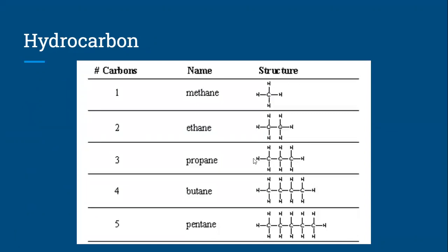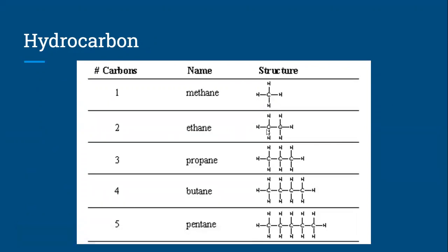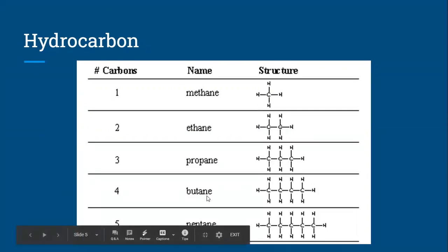Here's a look at what the carbon chain looks like. Methane has just one carbon, ethane has two carbons connected, propane has three carbons connected, butane has four, and pentane has five. If you notice, they look like they form a chain, and that's why we call it a carbon chain.